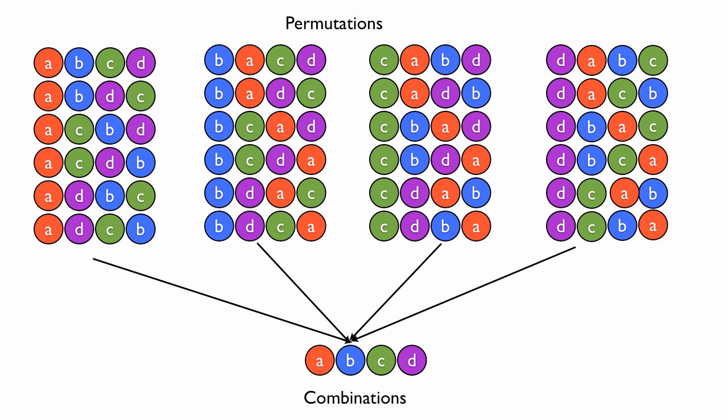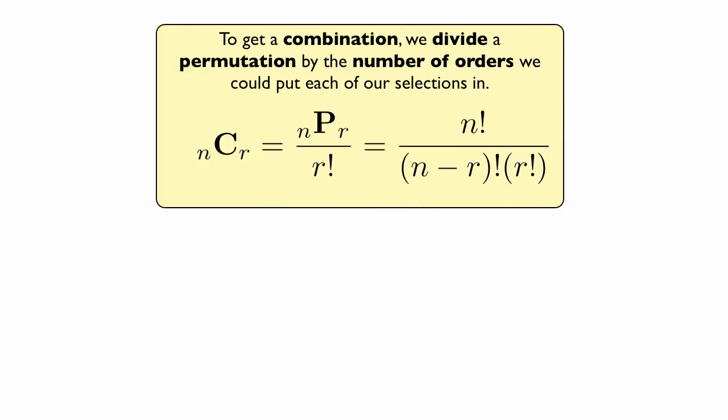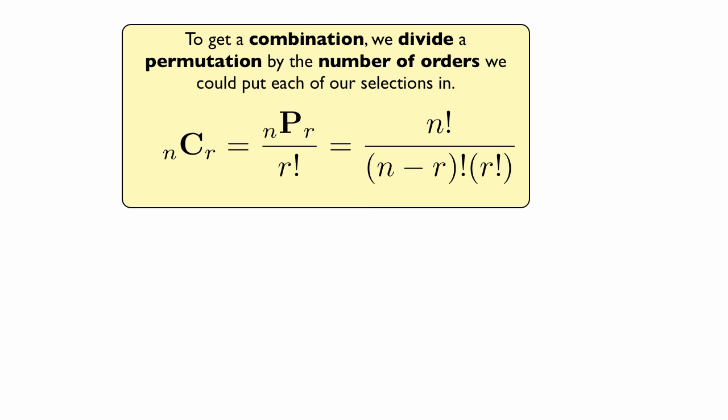Well, we're going to divide by the total number of orders we can make out of the objects that we choose. In other words, to get a combination, we divide a permutation by the number of orders we can put each of our selections in.